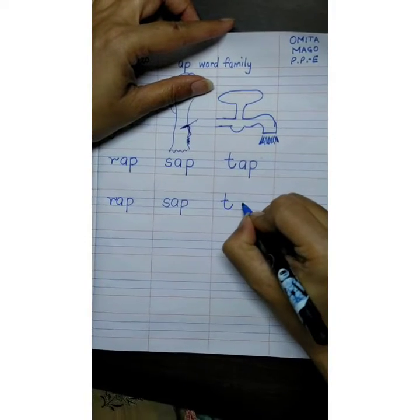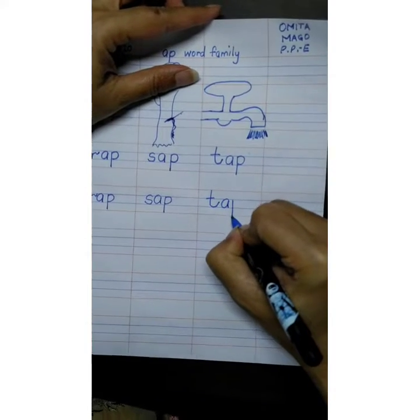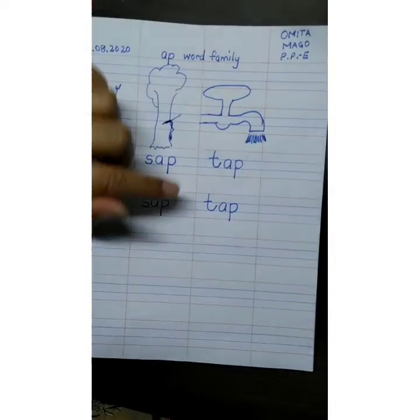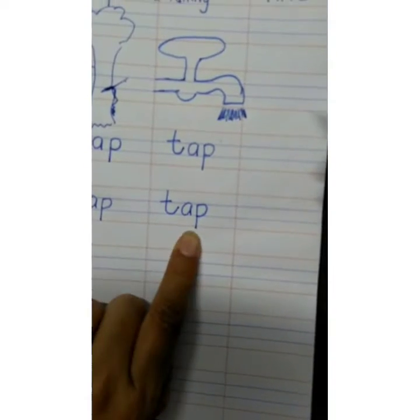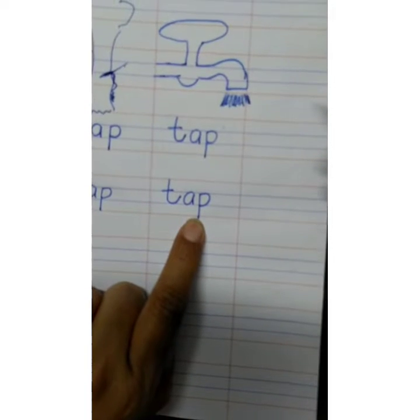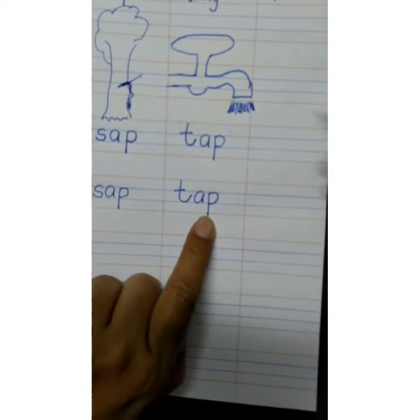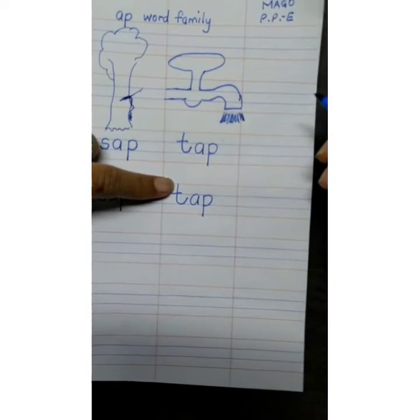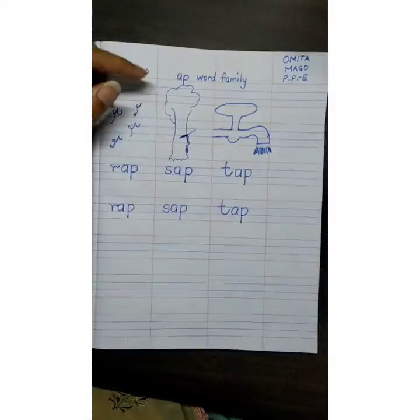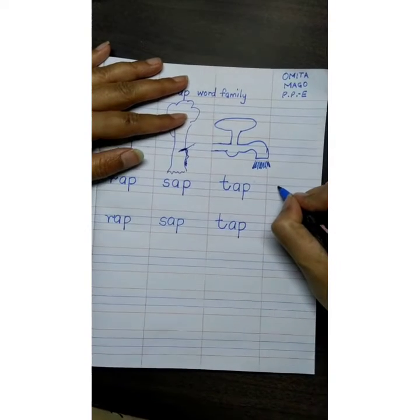T, app, tap. And when you are writing t, app, tap, your t should touch the red line on top and the p should touch the bottom red line. Correct? Now, the last word will be...